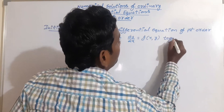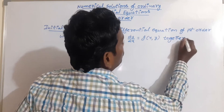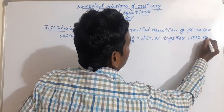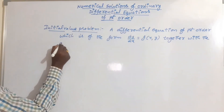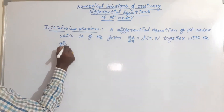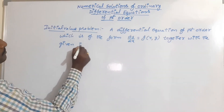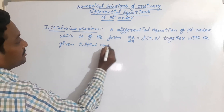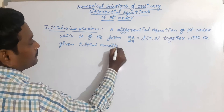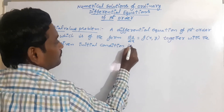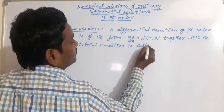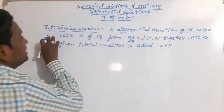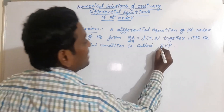Together with the given initial condition, it is called an initial value problem. The short form of initial value problem is IVP.